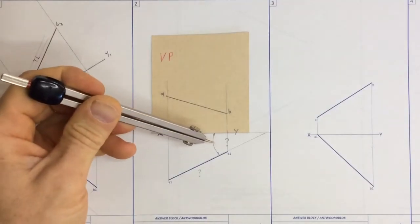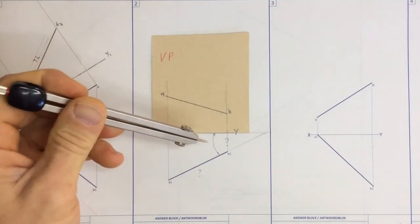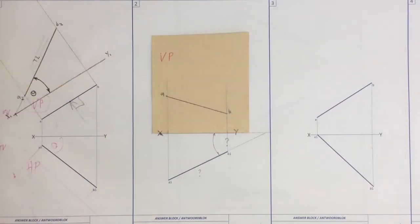And the true inclination that we are looking at is the true inclination to the vertical plane. What does that mean?